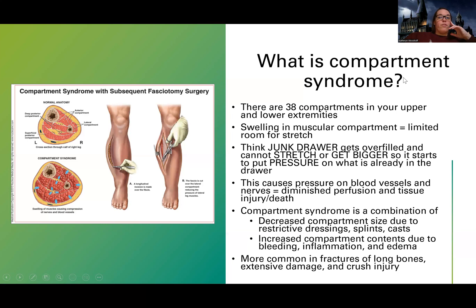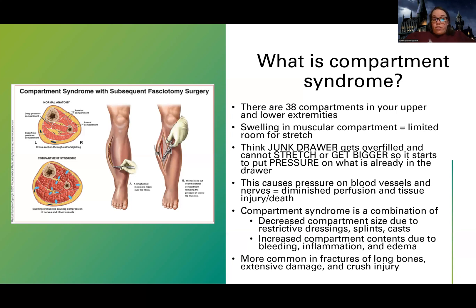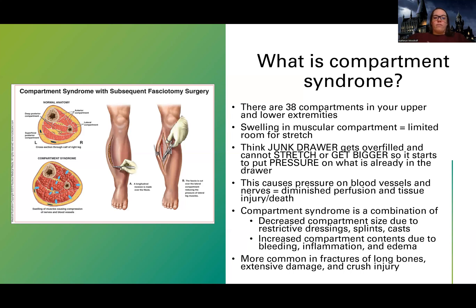The P in compartment syndrome stands for perfusion issues. This is a life-or-death emergency. A patient can end up needing an amputation or losing their limb because of decreased blood flow - similar to everything we learned about amputation and decreased flow. Compartment syndrome is most common in people that have long bone injuries, like femur fractures. Those that have had extensive crush injuries or major damage are also at high risk, because there's going to be more inflammation in those compartments leading to worsened blood flow.